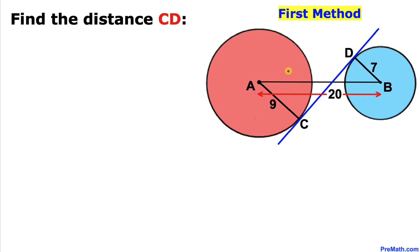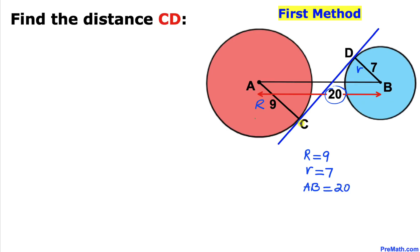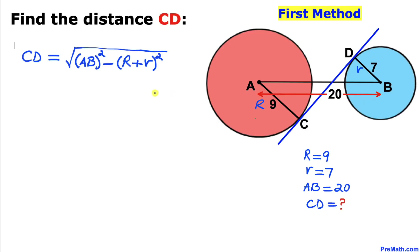Let's look at the bigger red circle — the radius of this circle is 9, which I'll call uppercase R. So uppercase R = 9. For the blue circle, I'll call its radius lowercase r, so lowercase r = 7. The distance between the two centers A and B is 20, so AB = 20. Now we are going to find the distance CD.